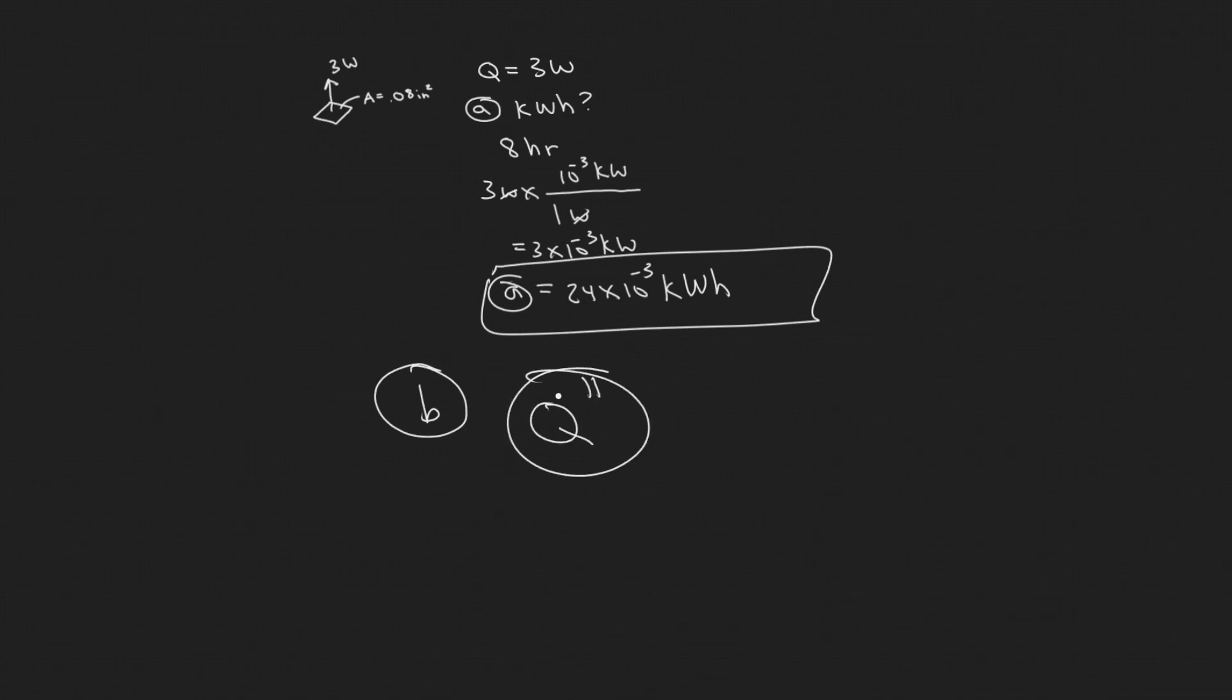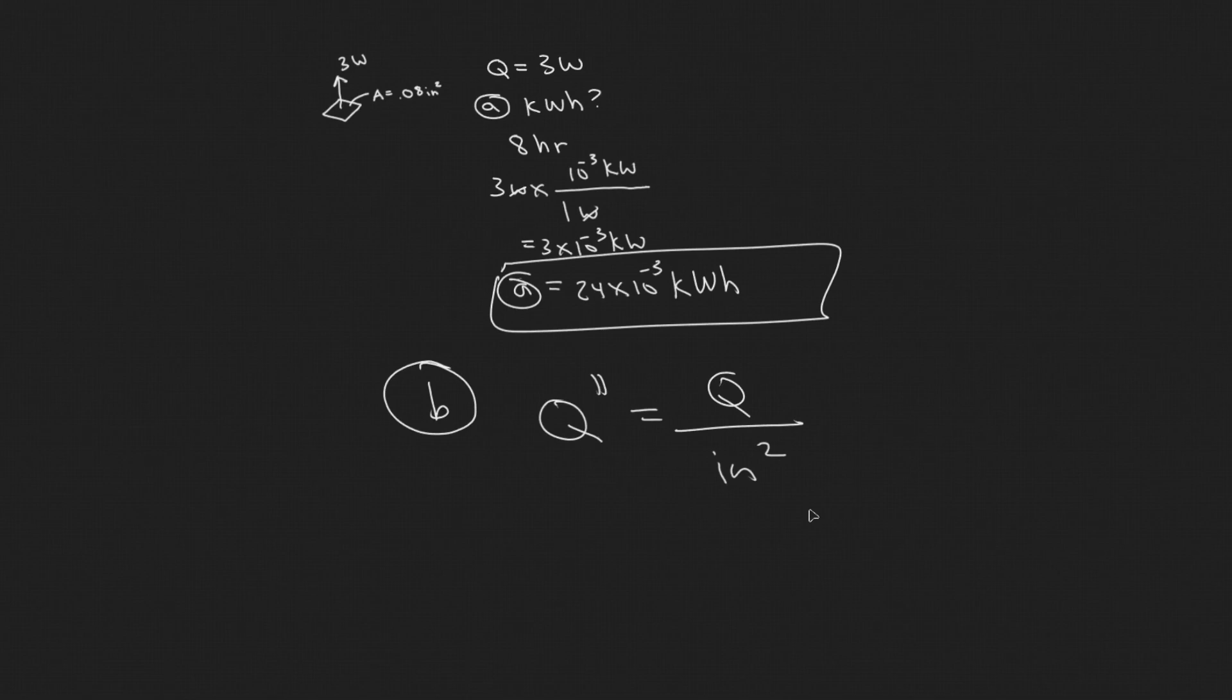So you need to know that the heat flux, you usually write it like this as Q double prime. And the reason we do this is the prime, or each prime basically indicates some level of a unit, like a distance. So Q prime would just be equal to Q over, in this case, whatever your units are. So in this case, we're dealing with inches. So it's basically some length, where Q double prime is Q divided by some area. So it's basically the watts per inches squared, which is what they want.